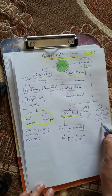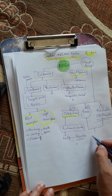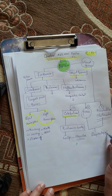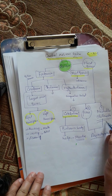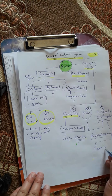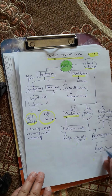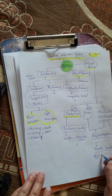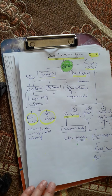The medulla oblongata and pons perform different types of work. For example, the respiratory system is controlled by the medulla oblongata and pons. Heartbeat is controlled with the help of the medulla oblongata. Similarly, thirst — for example, when someone feels hungry or thirsty — that is also controlled by the medulla oblongata.